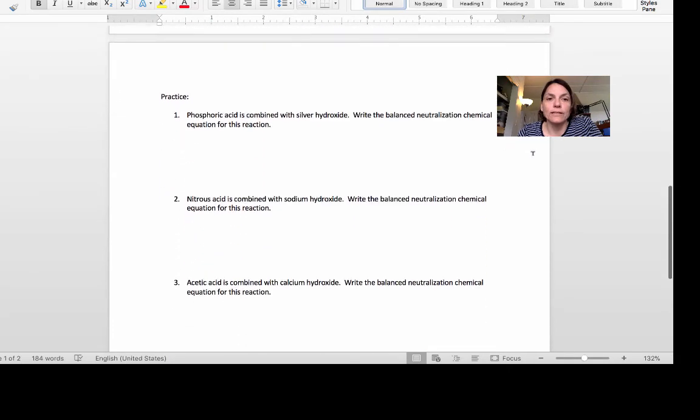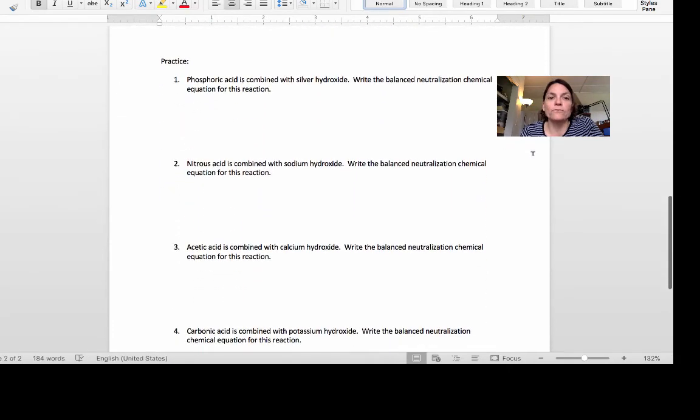All right the next one is phosphoric acid is combined with silver hydroxide. Your first job is to go to the list and look up the chemical formulas. I happen to know them off the top of my head so I'm going to try to type them in here.